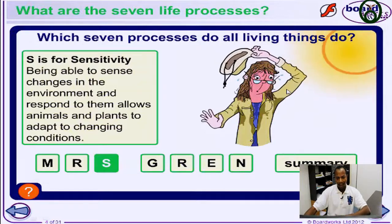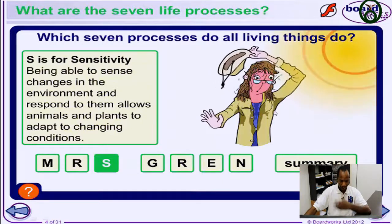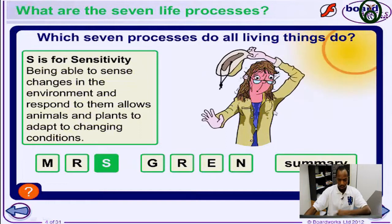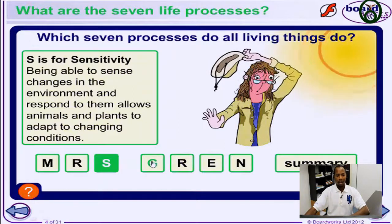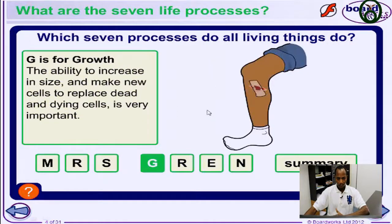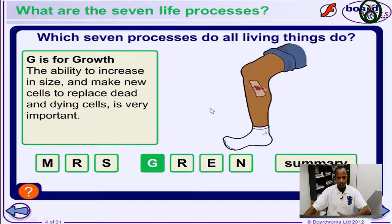If light comes to your eyes, you react because nerve signals are sent to the brain and interpreted. Then, growth — all living things show growth, by growing in size and weight, getting taller, bigger, and so forth. All living things, plants or animals, do show growth.